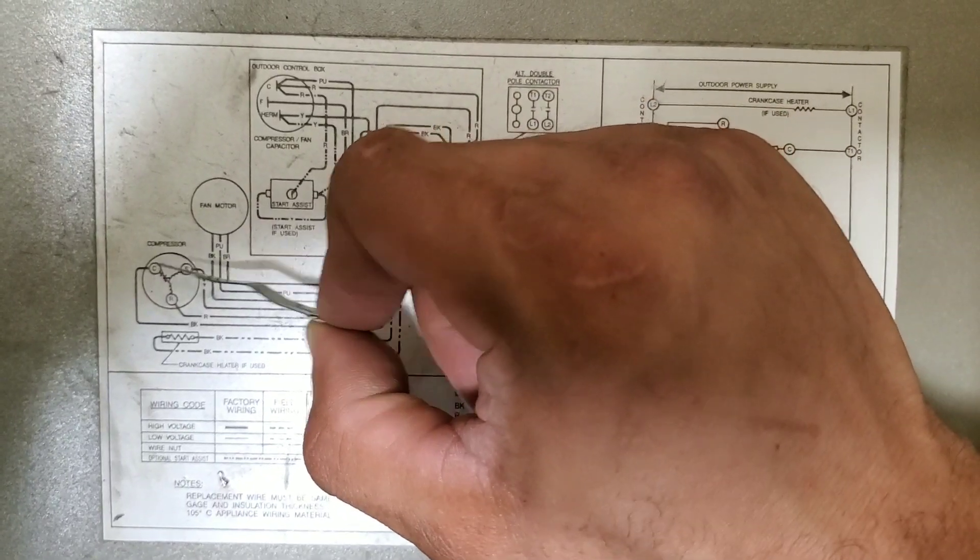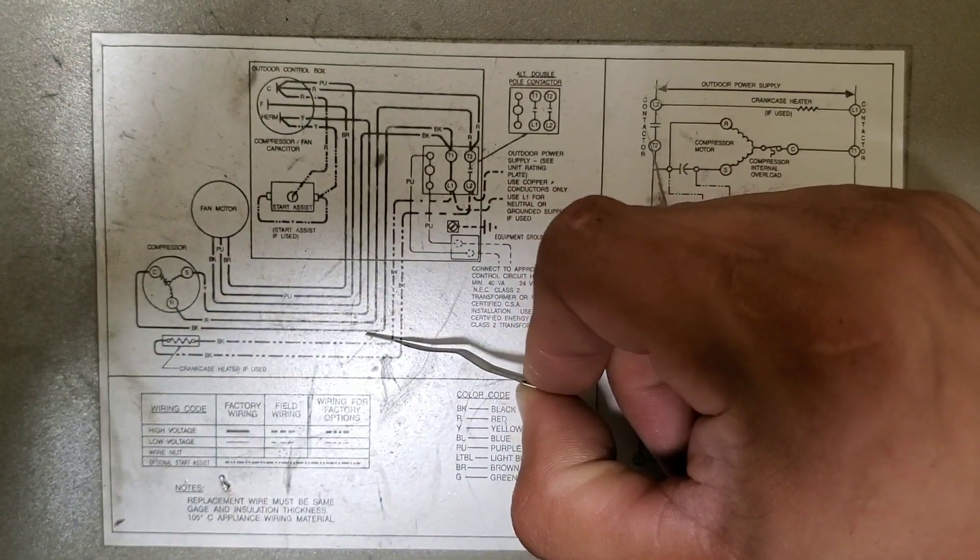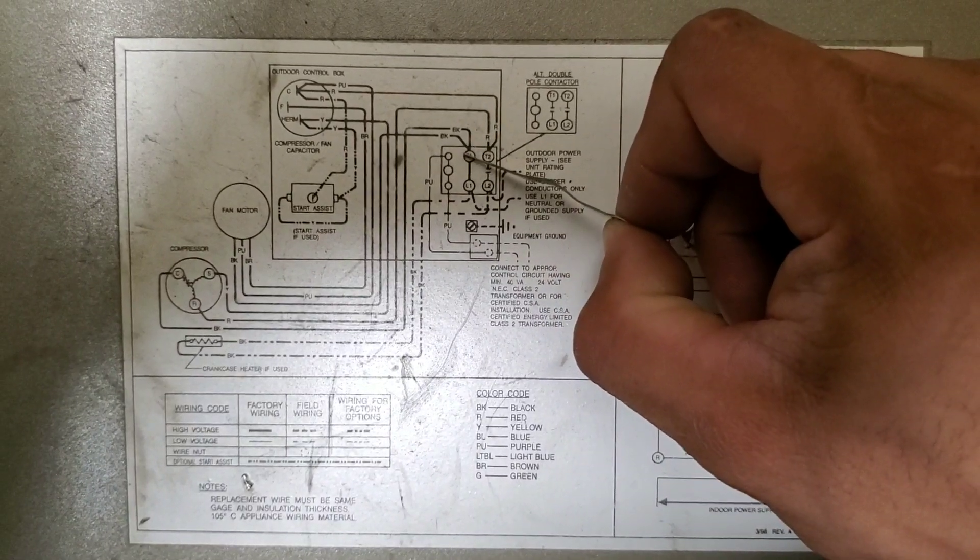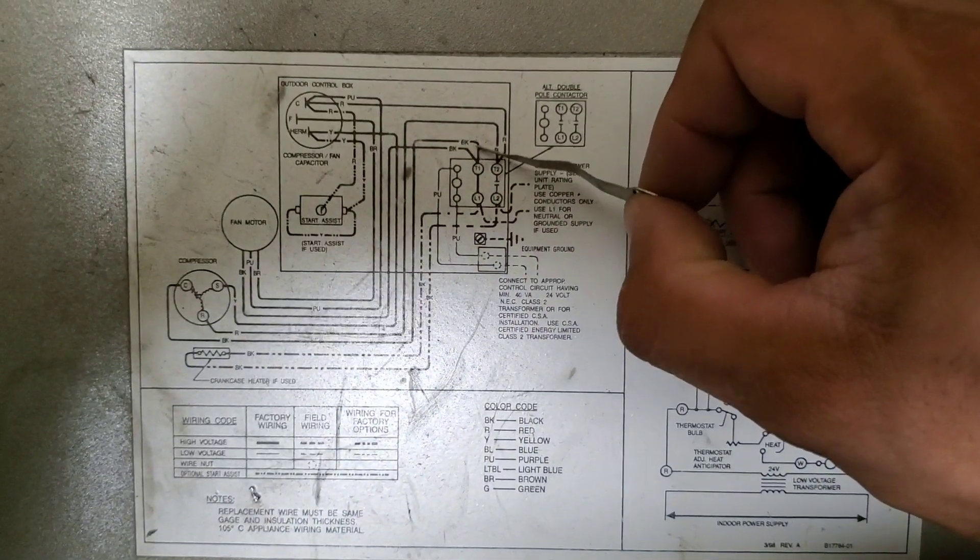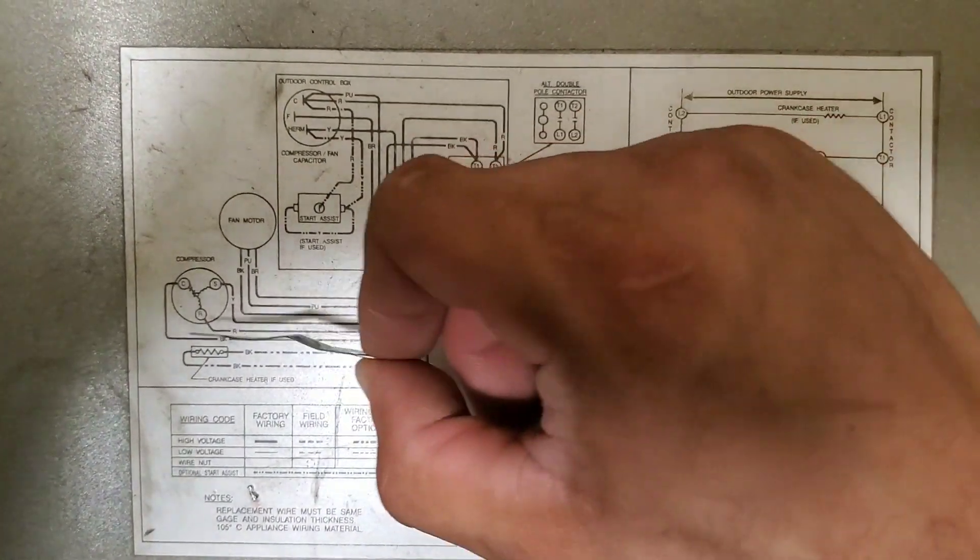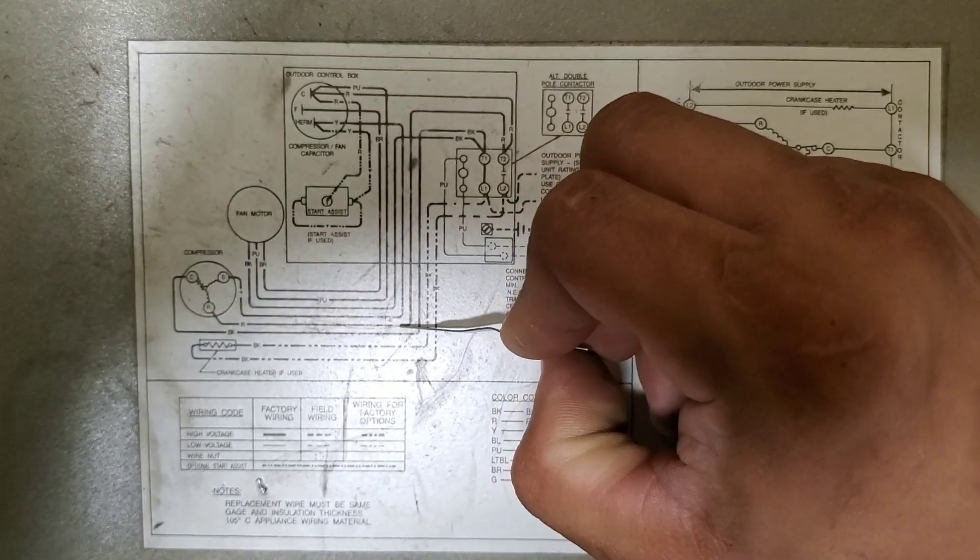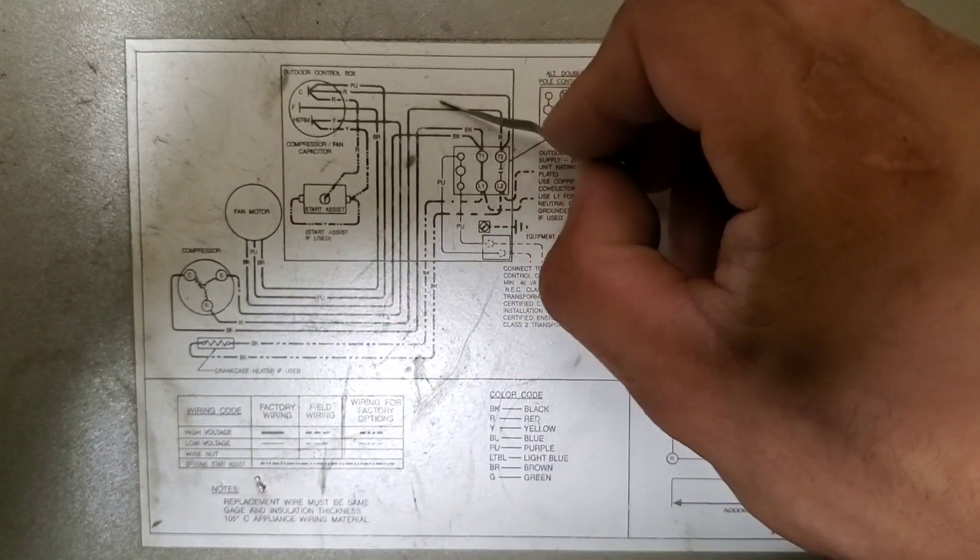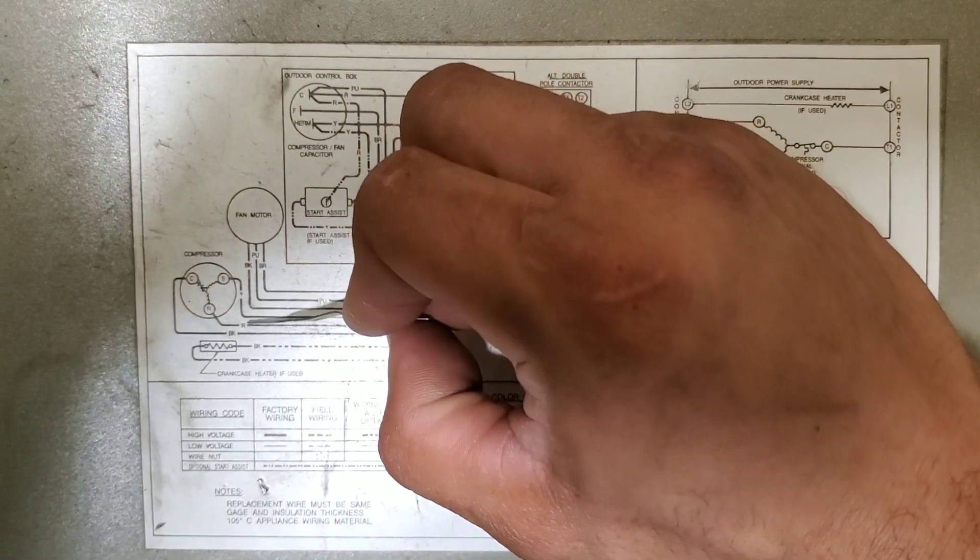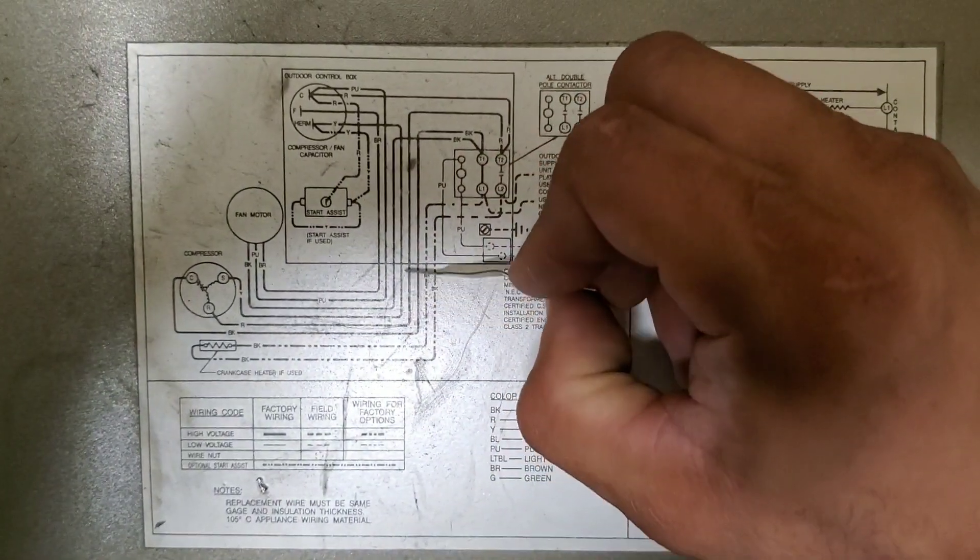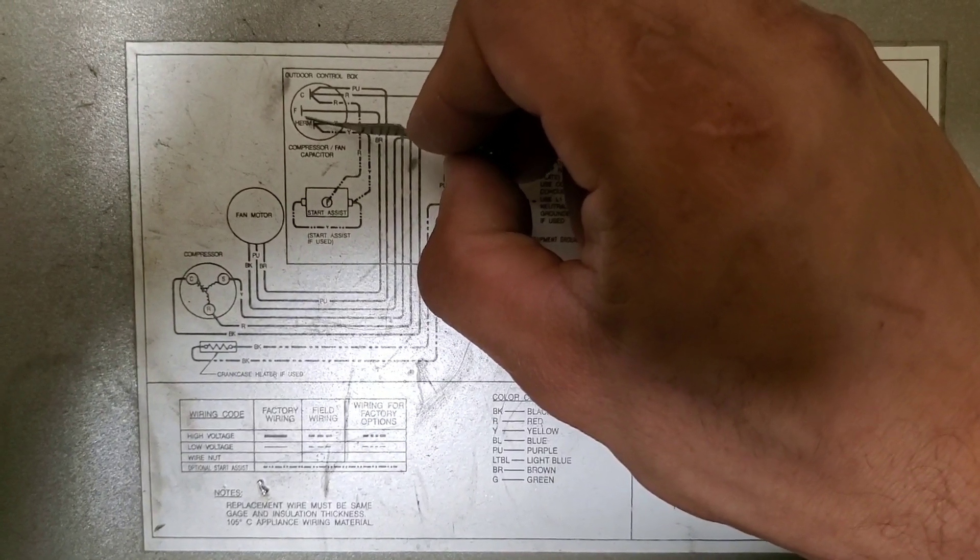It goes to T1. So it doesn't matter where your common is in your new compressor, that wire is always going to go to T1 on your contactor. Your run is going to go here to T2 on your contactor. Your start, we trace it, goes up and it's going to go to the urn on your run capacitor.